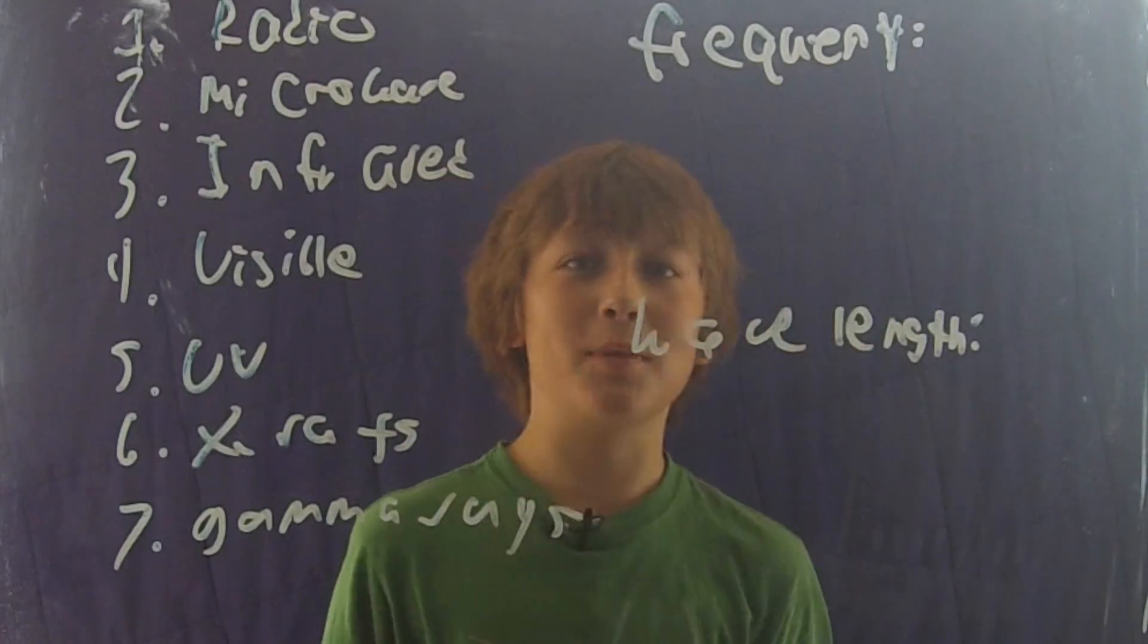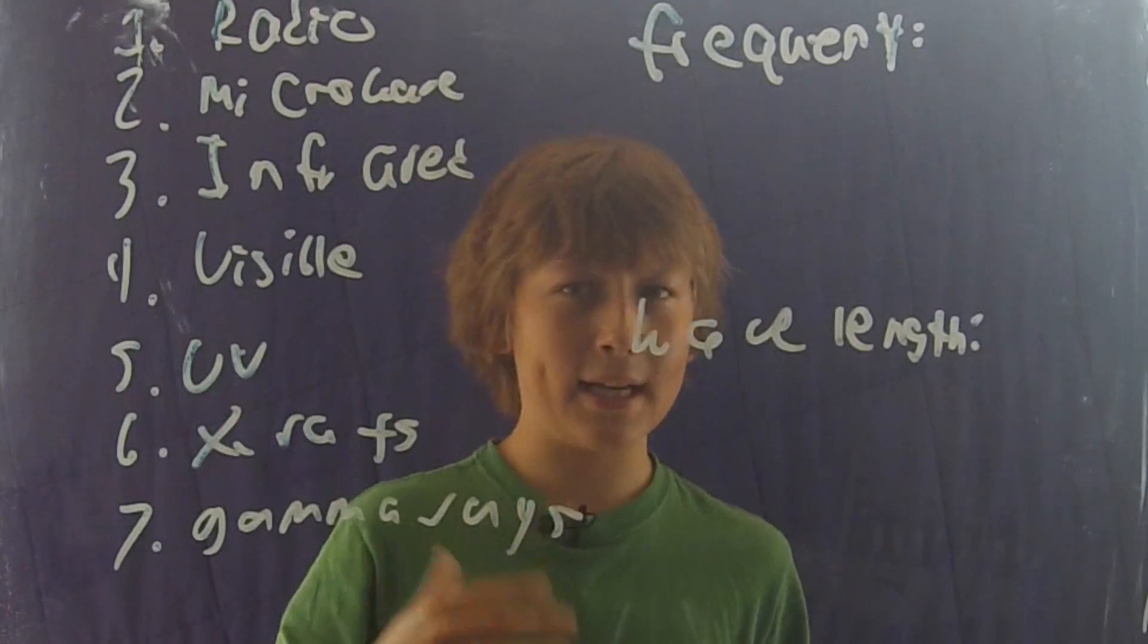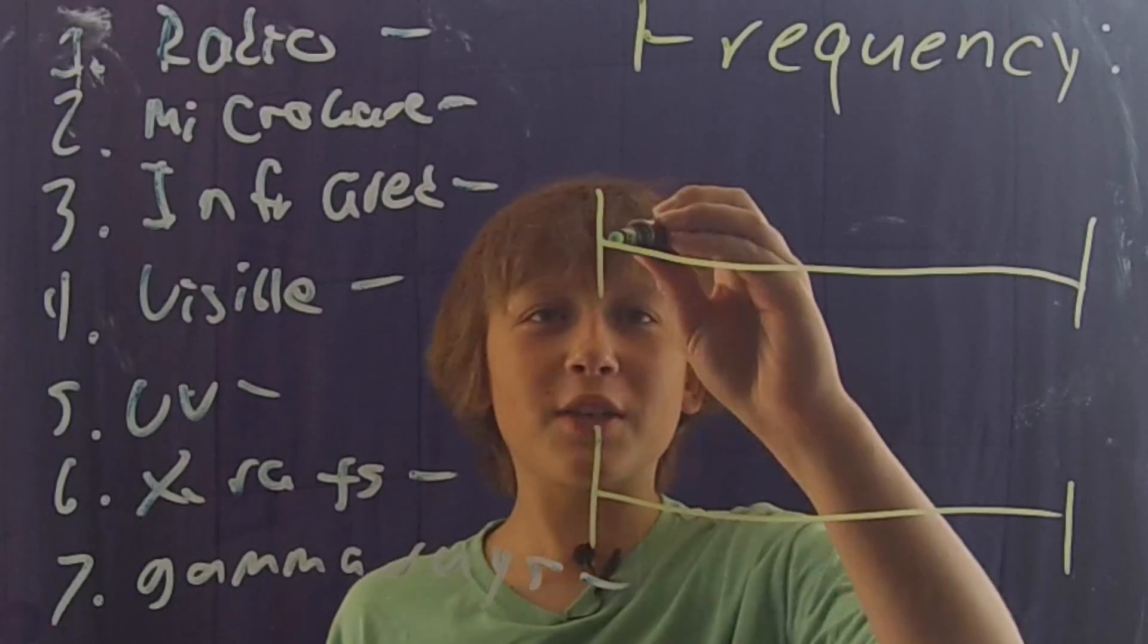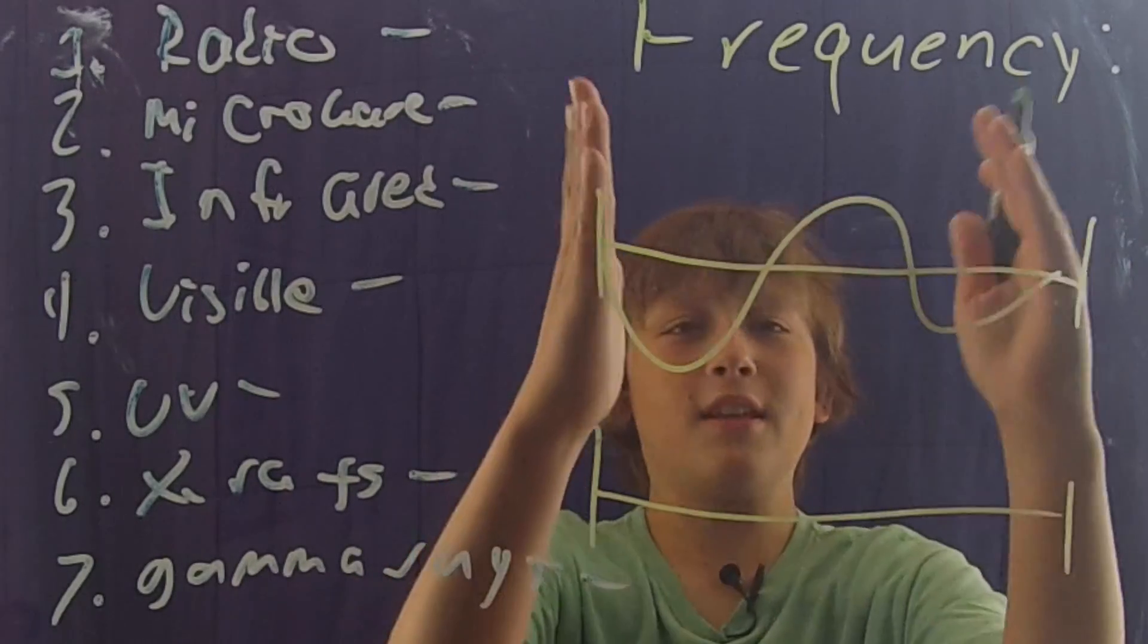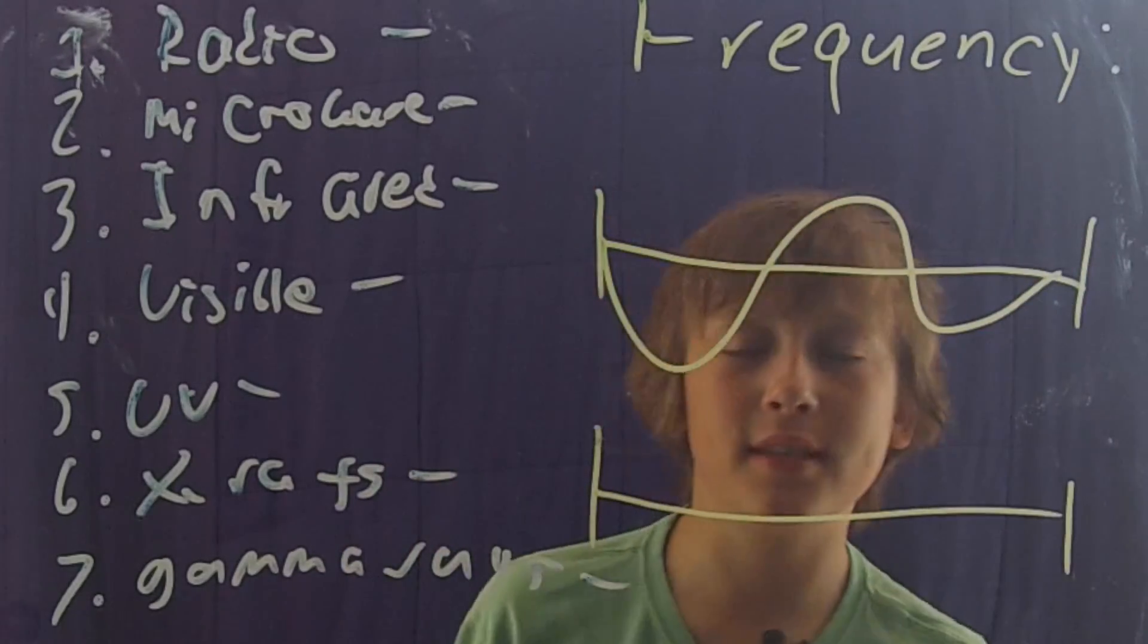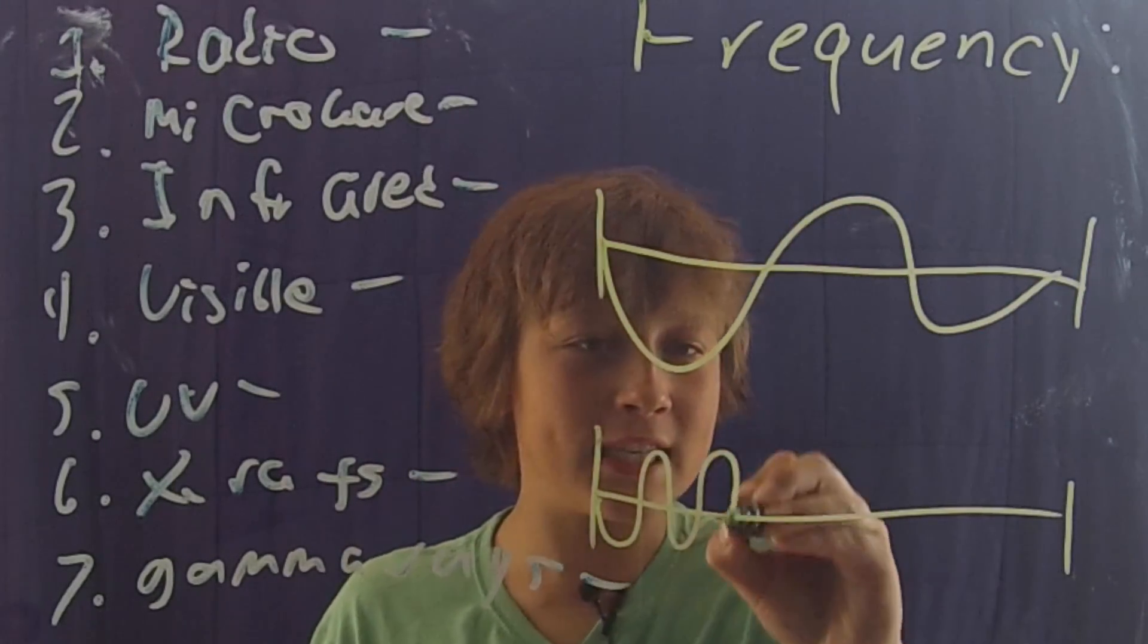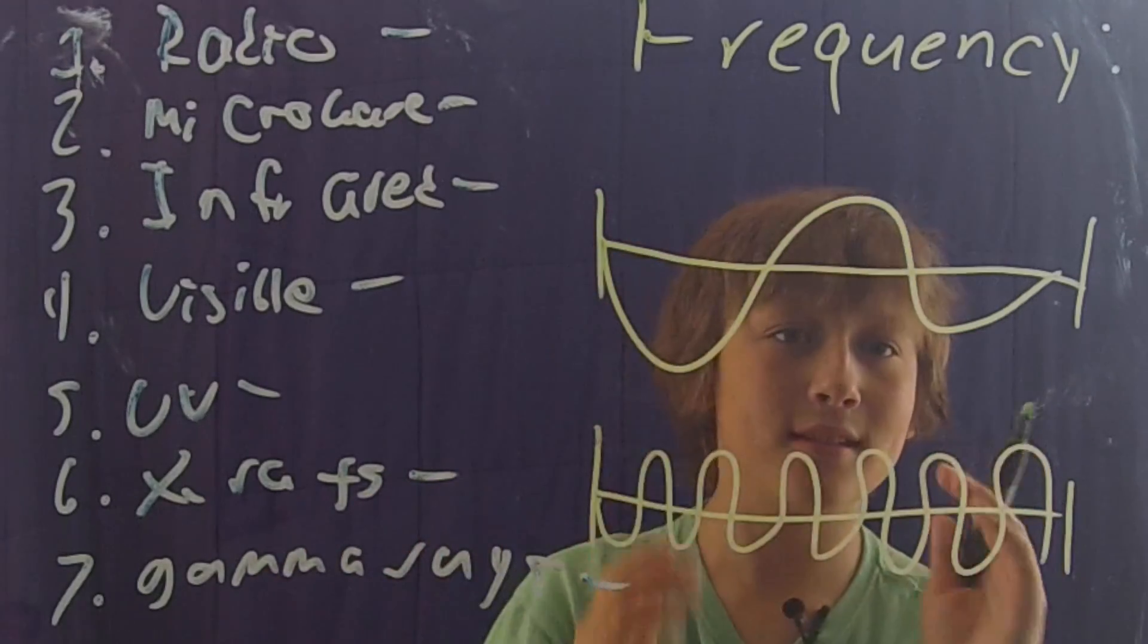Frequency simply just means how often a wave will occur in a specific amount of time. As we can see here this has a very low frequency. In this one second period it's only occurring about one and a half times. And as we can see here this has a very high frequency because it's happening a lot.